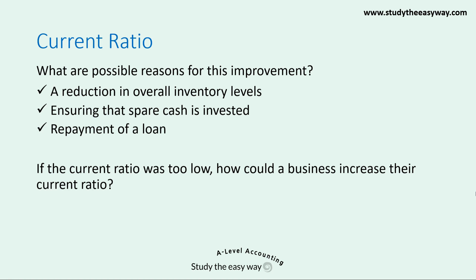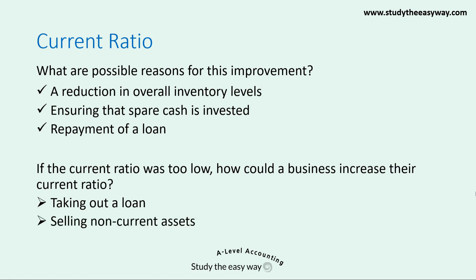If the current ratio was too low, how could a business increase their current ratio towards the ideal level? Typically, the methods involve increasing the amount of money in the business without affecting the other current assets. Ways of doing this include taking out a loan, selling non-current assets, or selling shares.